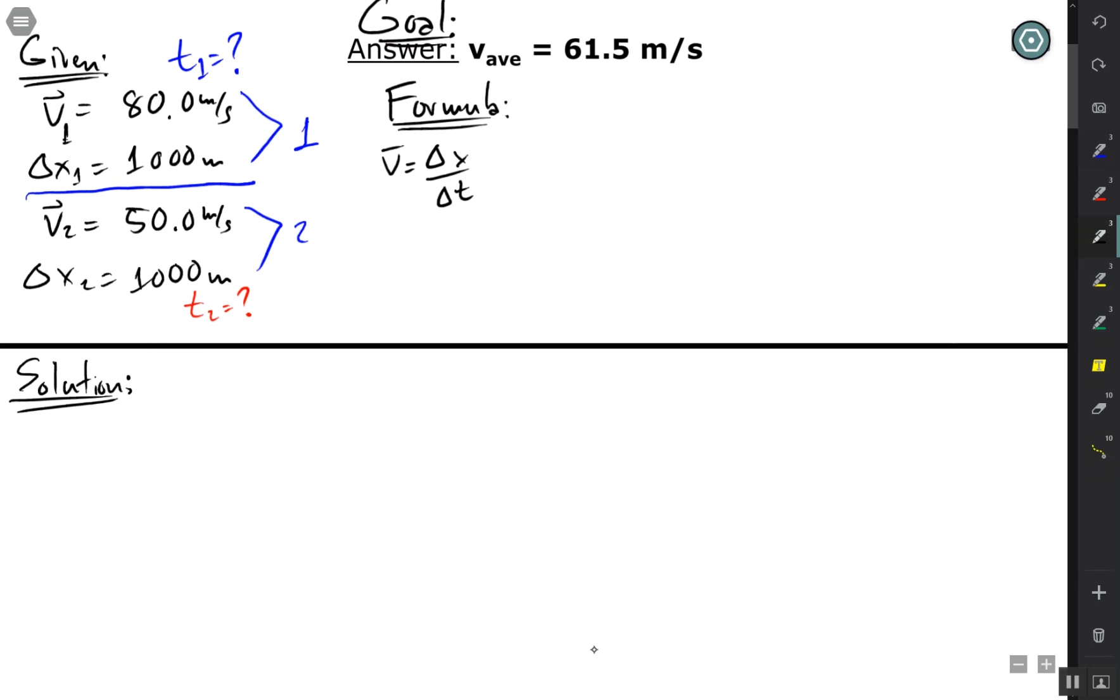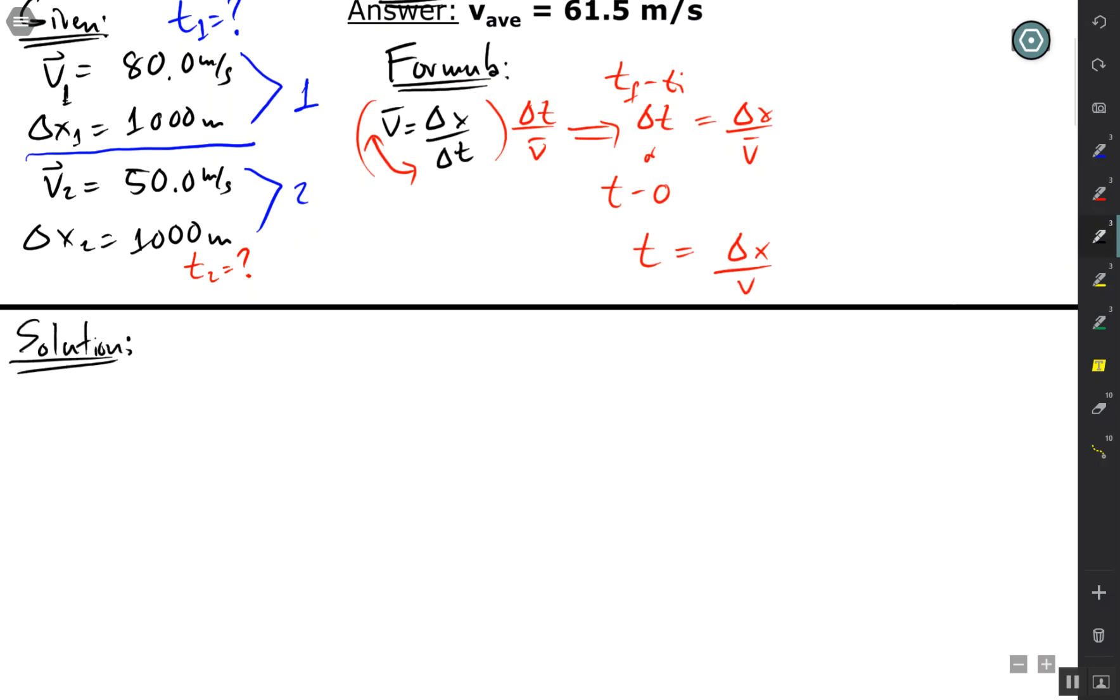So we are going to change this formula. We're just going to switch these out, cross multiply essentially, multiplying both sides by delta t, our average velocity, and I would get delta t equals delta x over v. If I have this t final minus t initial, or t minus zero, then I can just use t equals delta x over velocity 1 or velocity 2.